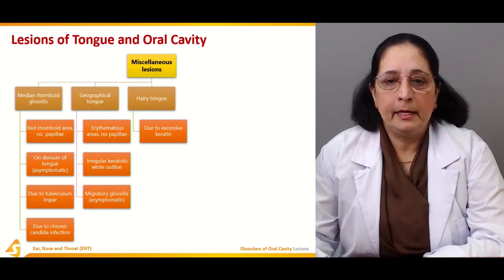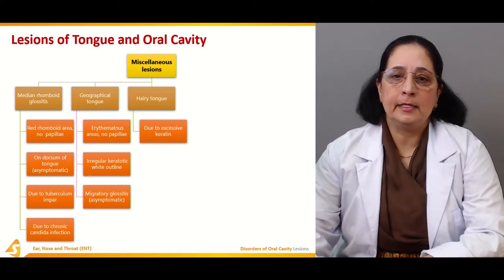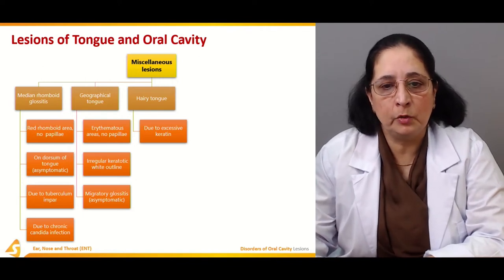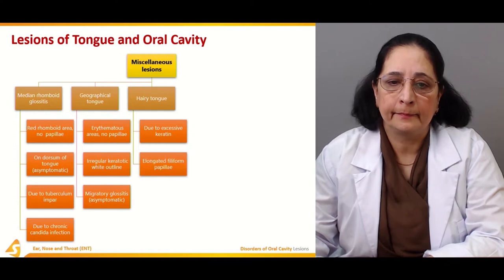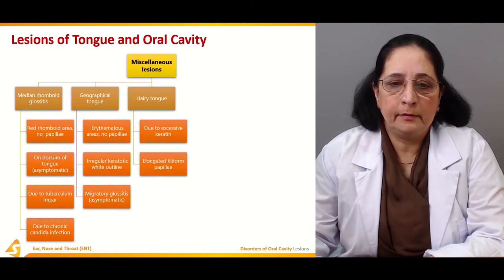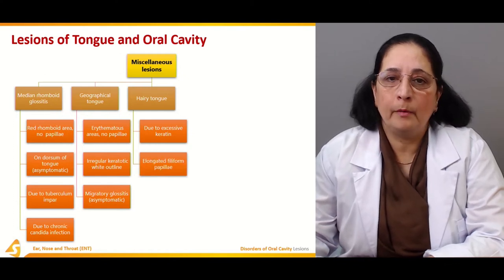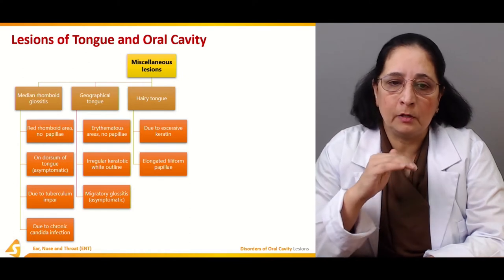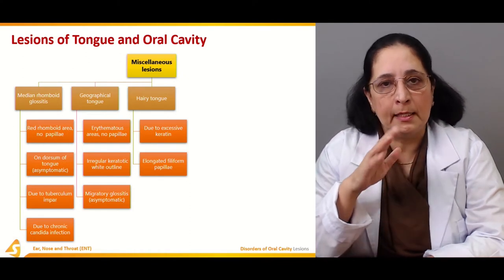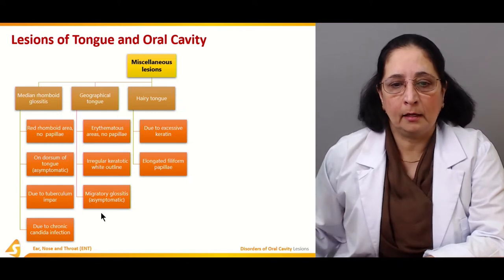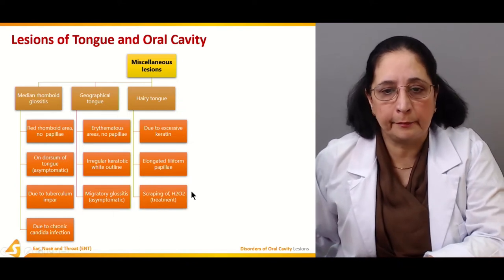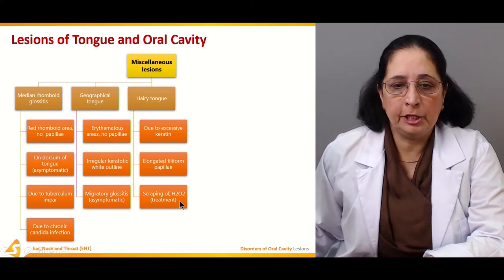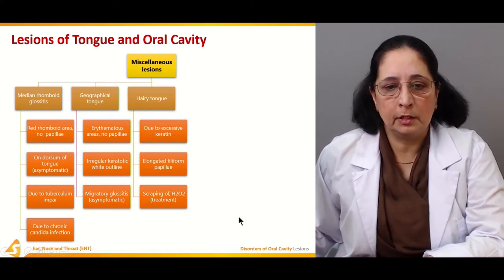Then we have hairy tongue, another miscellaneous lesion due to excessive keratin. Elongated filiform papillae are present — unlike the previous two conditions where there are no papillae, in hairy tongue filiform papillae are present. Scraping with H2O2 is the treatment.